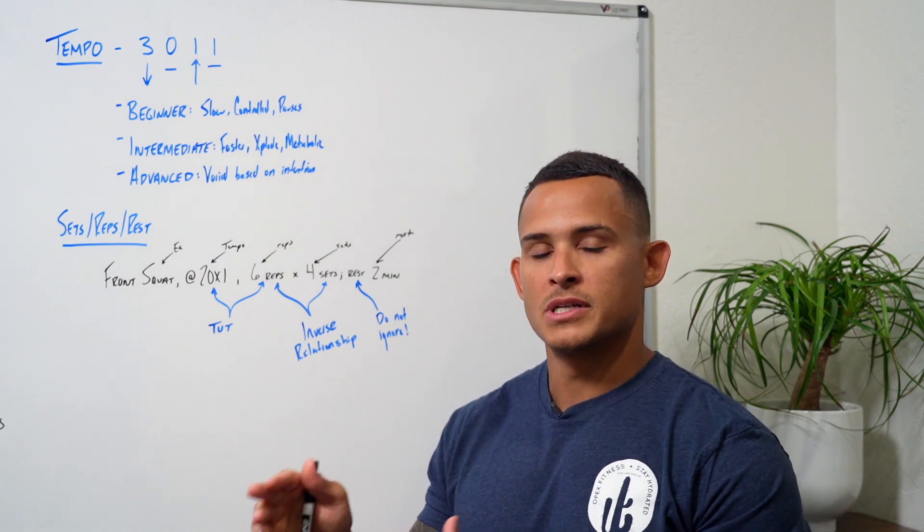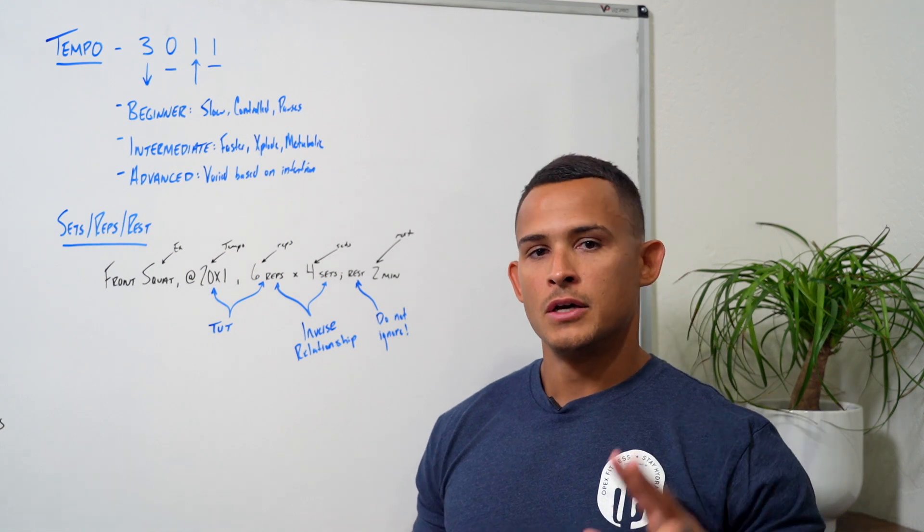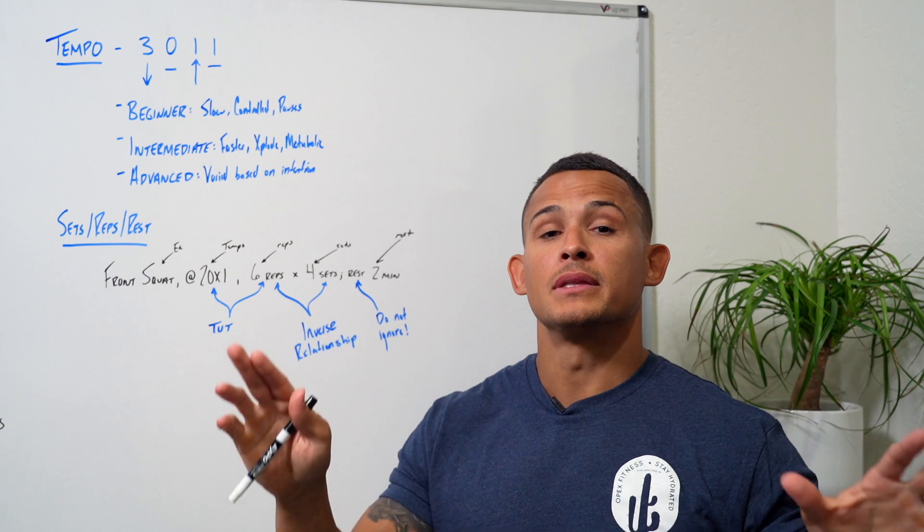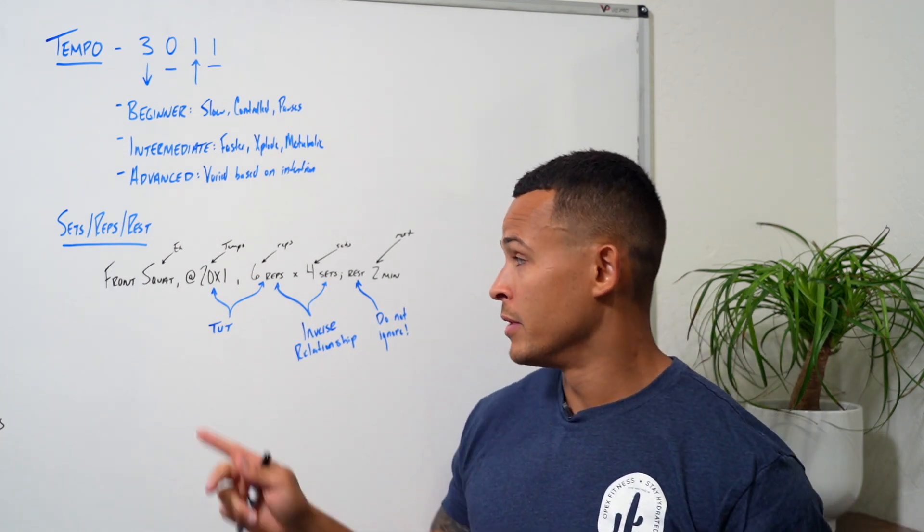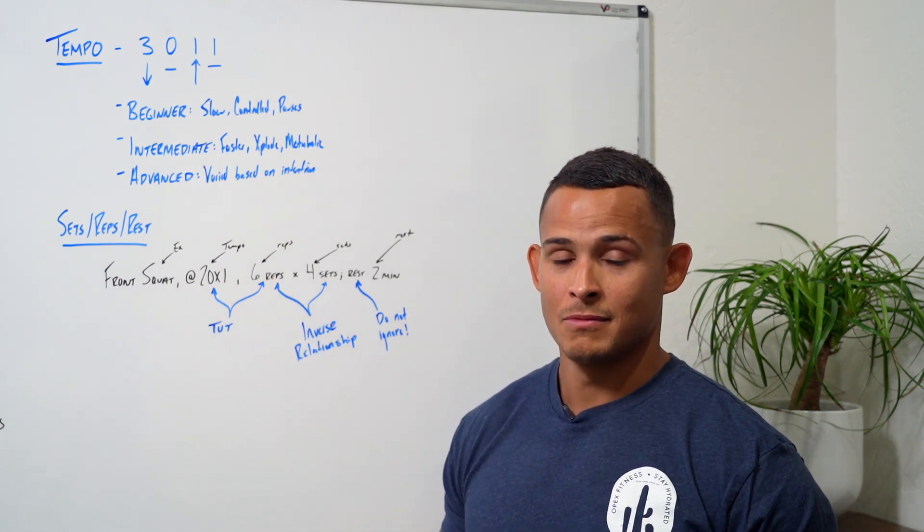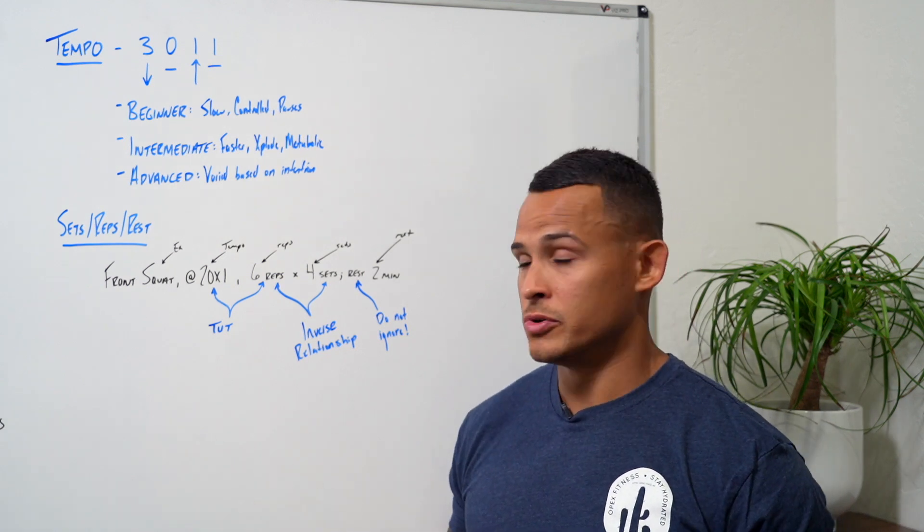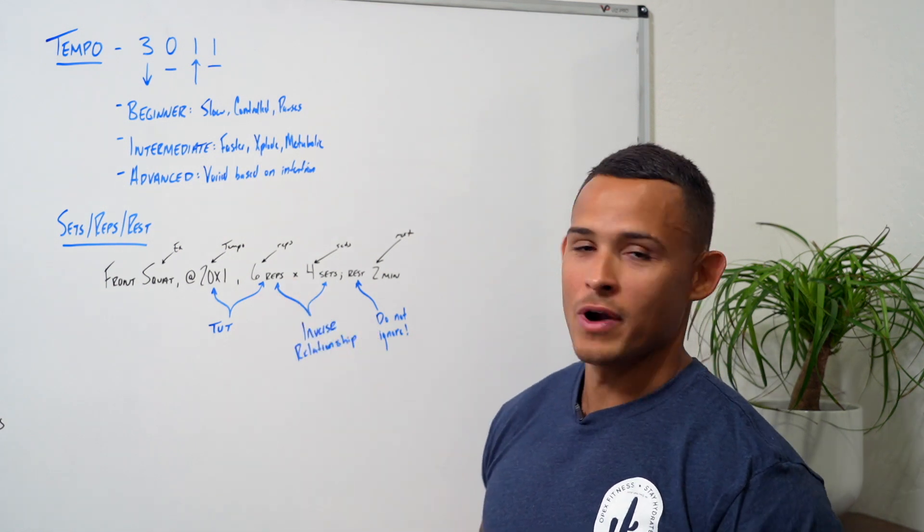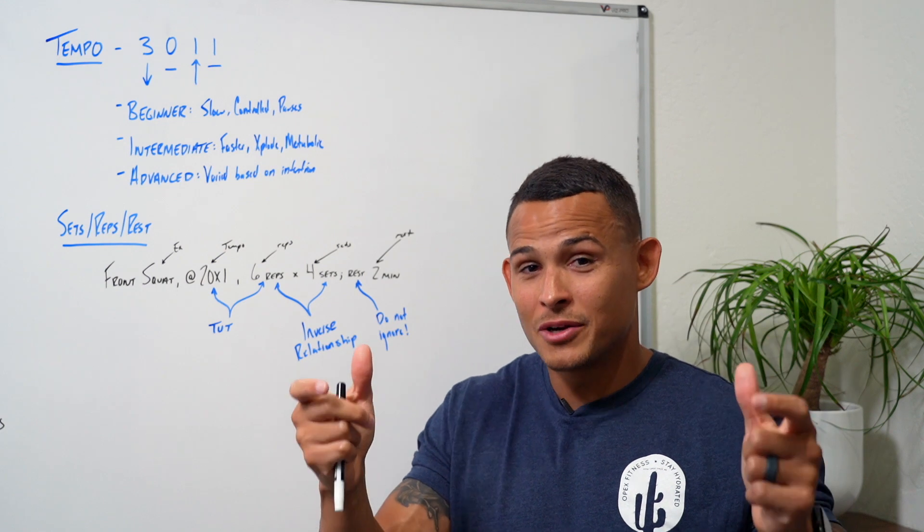This gets a little bit confusing for some coaches because you could have two training programs that have the exact same time under tension with completely different intentions. Think about this, a 4-0-4-0 tempo times six reps, right? Think about the total time under tension there. Now compare that to a 2-1-X-1 times 12 reps. The time under tension is very similar, but the intention is clearly different.